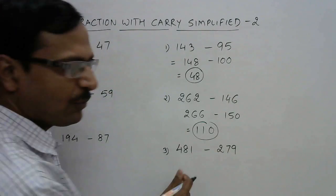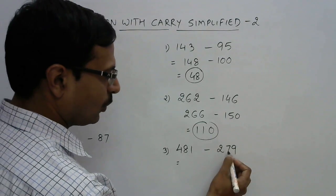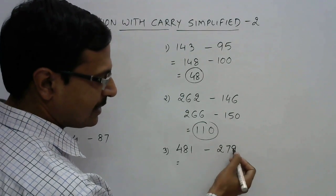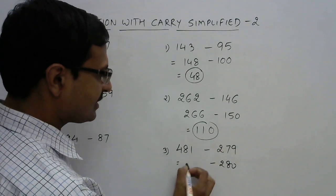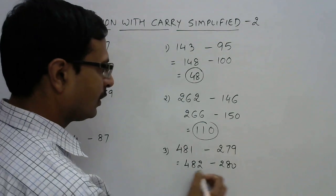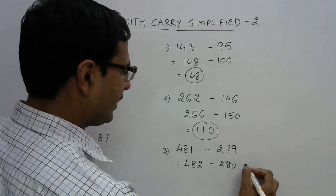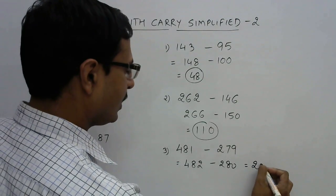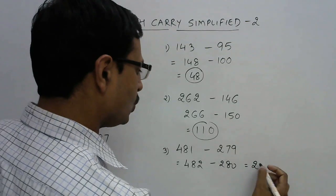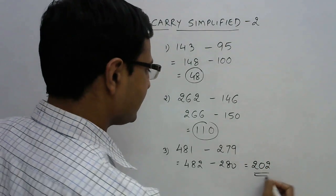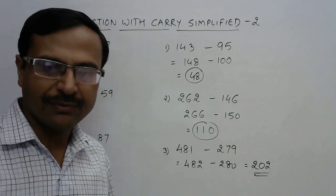Let's see 481 and 279. I know that this is 1 less than 280, so I will just make this as 280 and I will increase this by 1. So I will increase this also by 1. And now 482 and 280 subtraction is very easy. It is 202.